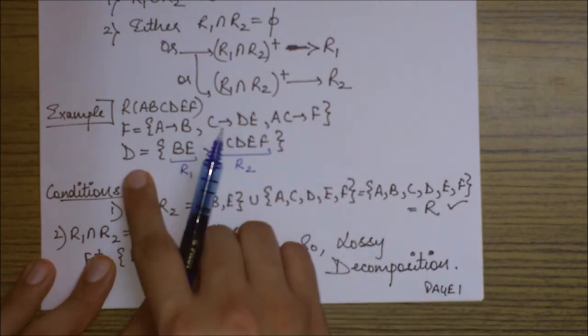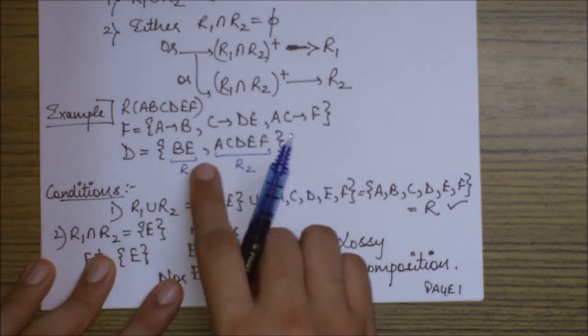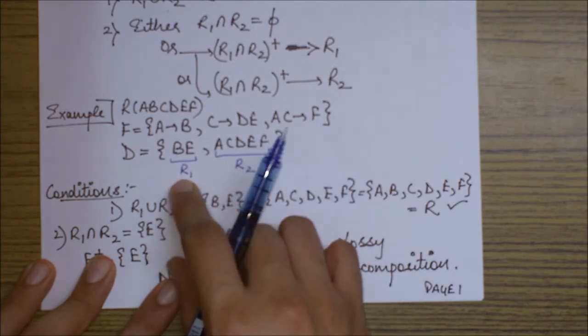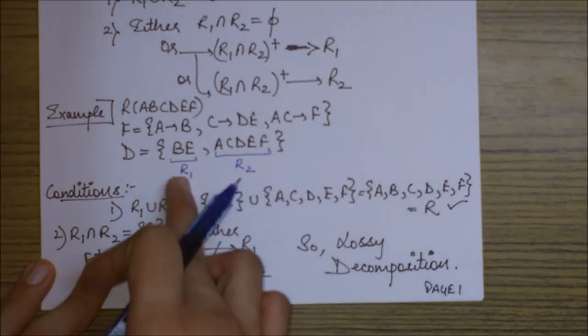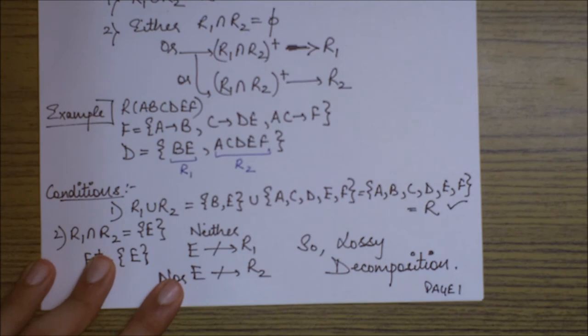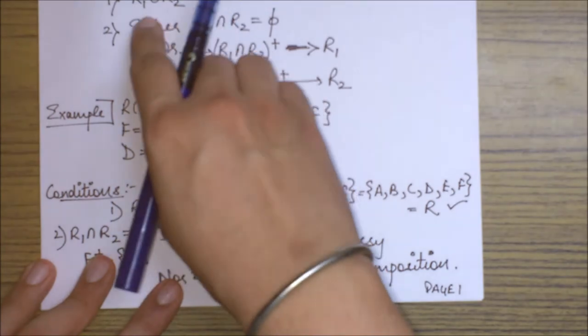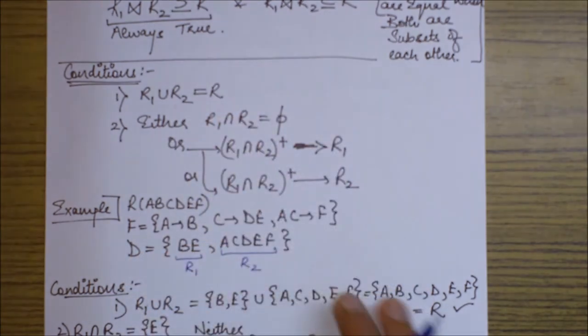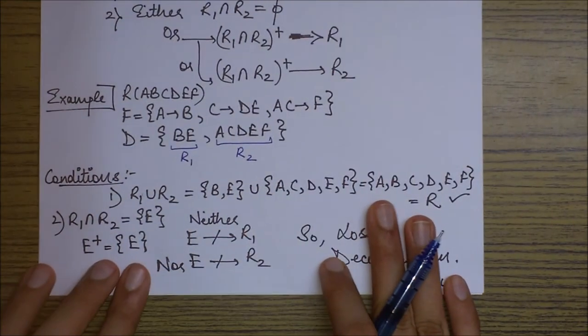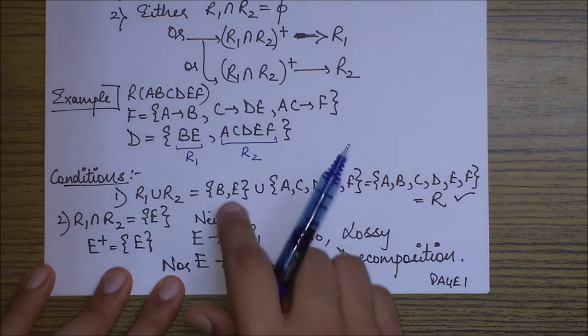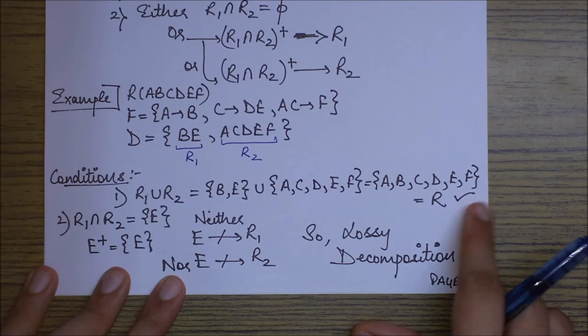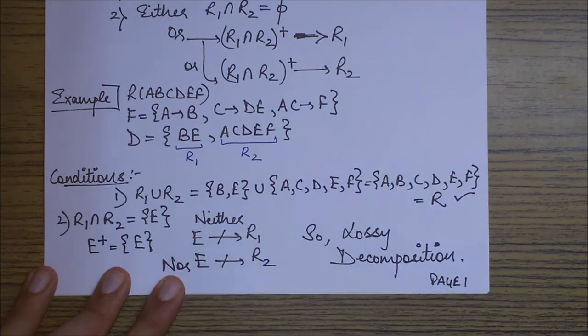And the decomposition set represented by D, which says there are two decompositional schemas BE and ACDEF. So this is R1 and this is R2. You can also take it vice versa. So I directly move on to checking for the conditions. First condition was R1 union R2 should be equals to R. So if I perform this R1 union R2 operation, it basically means BE union ACDEF, which equals ABCDEF. That is, I am able to get that R set. So first condition is satisfied.